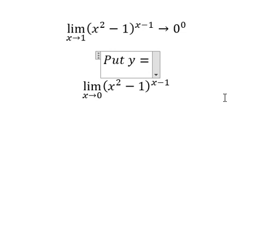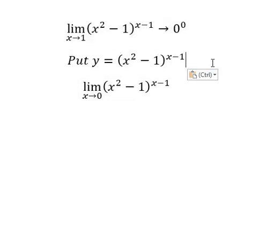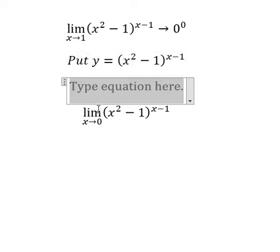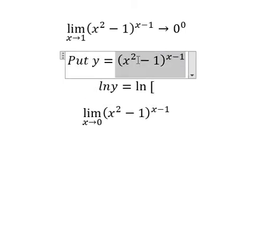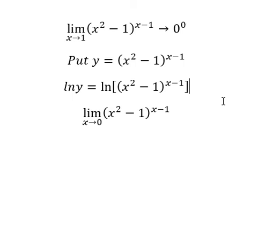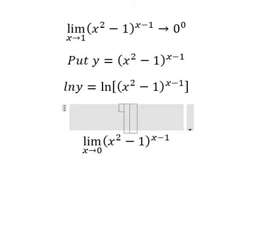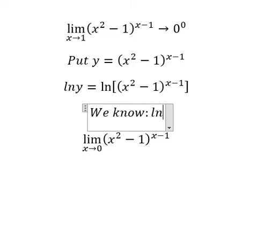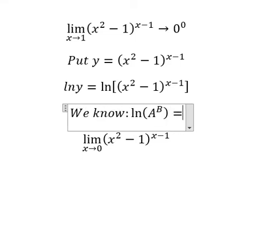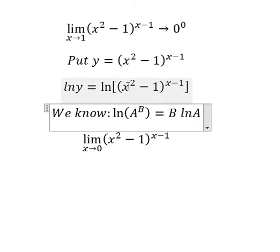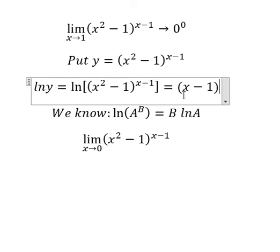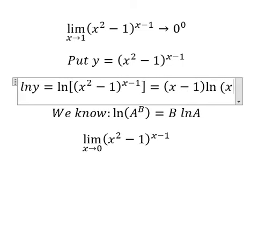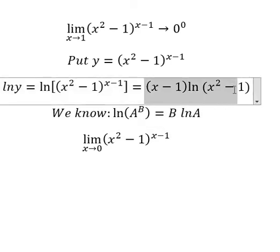I will put Y equals to this expression. Now I will take the natural log of both sides, so ln(Y) equals to ln of this one. We know that ln of A to the power of B equals to B·ln(A). This is A and this is B, so if we apply the formula in here...